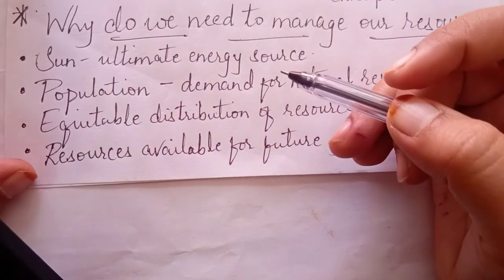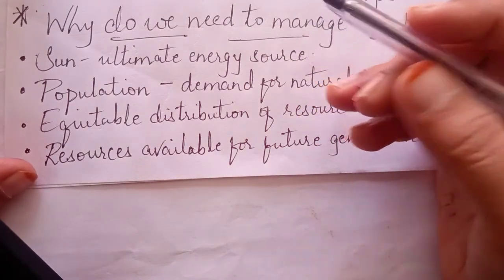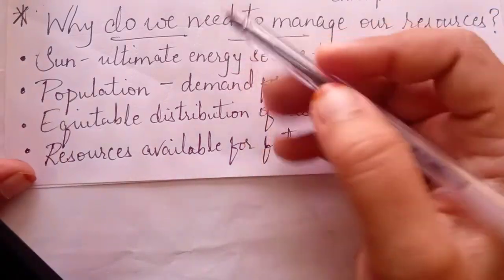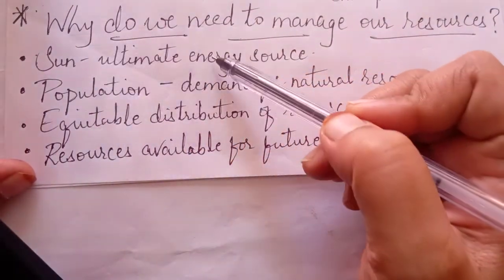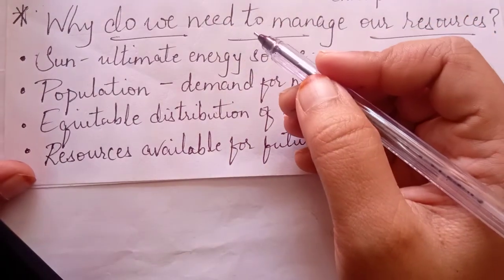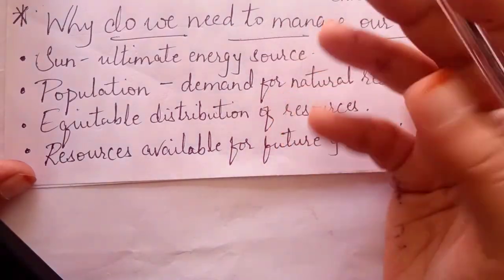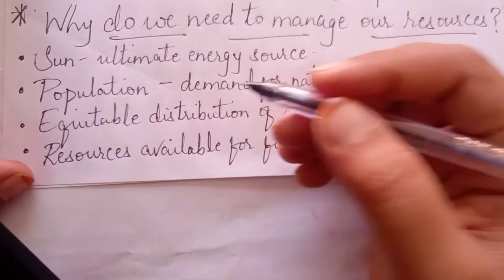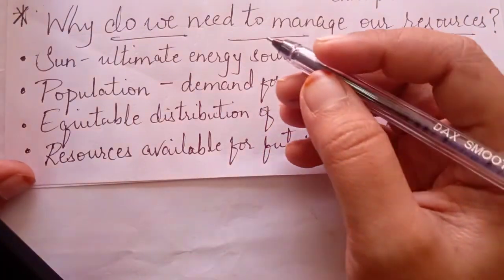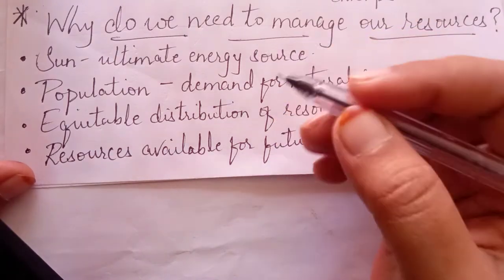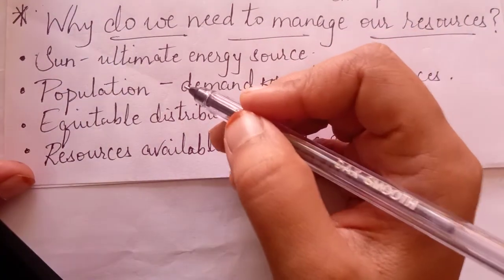There are some very important reasons for that. First one: Sun is the ultimate source of energy on earth. We are using different kinds of materials - the food, the roads, buildings, clothes, books, toys, furniture, tools - many things. Everything that we are using in our life, we are getting it from some resources on the earth.